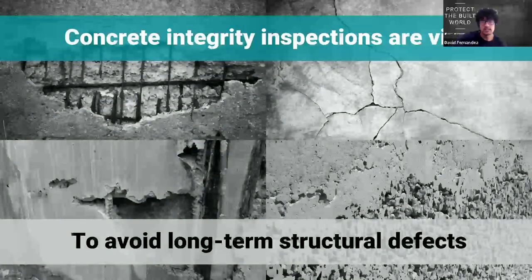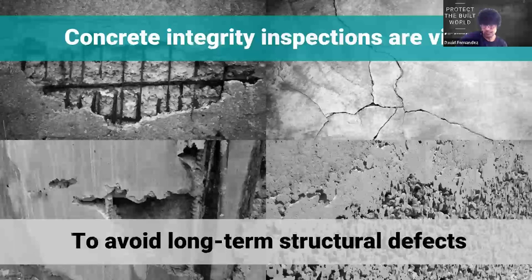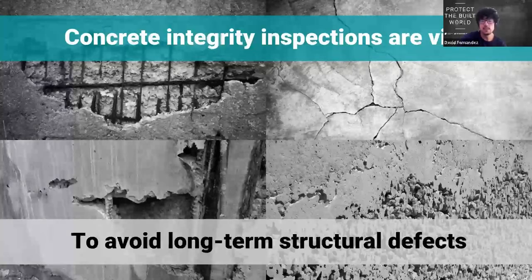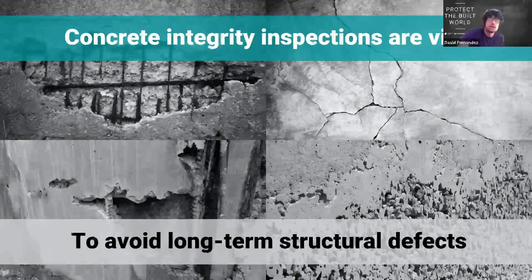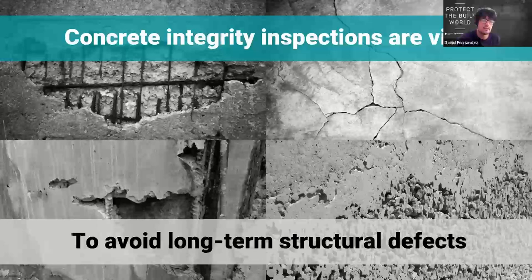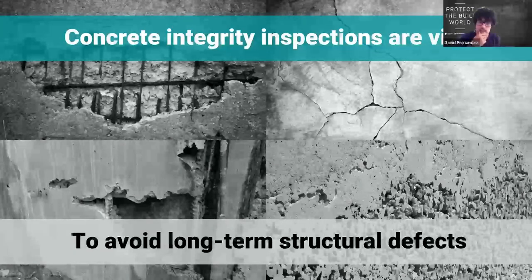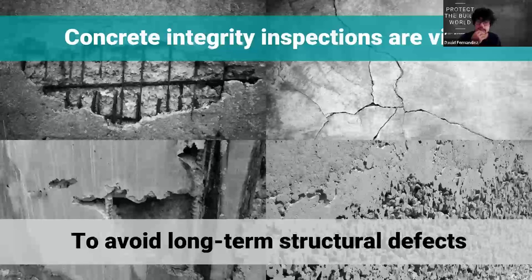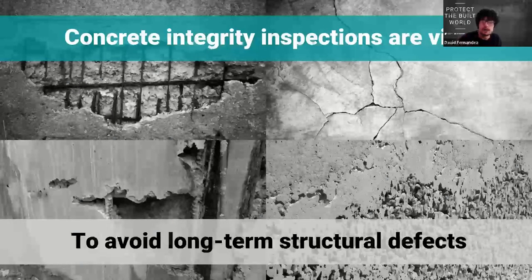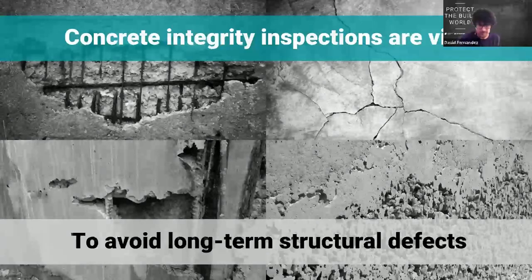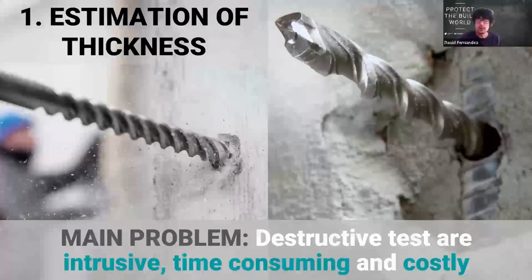Concrete integrity inspections are vital. Concrete has a lot of long-term defects that are normally visible later, after some years of the initial construction. The most common ones are laminations, internal and external cracks, corrosion that normally causes laminations, honeycombs, et cetera. That's why it's so important to prevent these damages that affect structural integrity by inspecting this infrastructure regularly. One of the main problems users may have is the estimation of thickness.